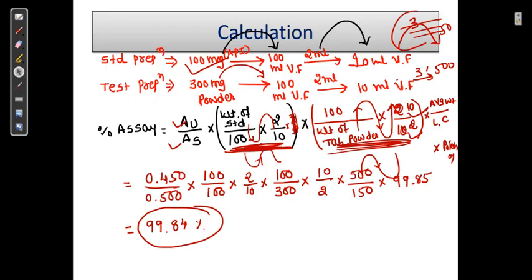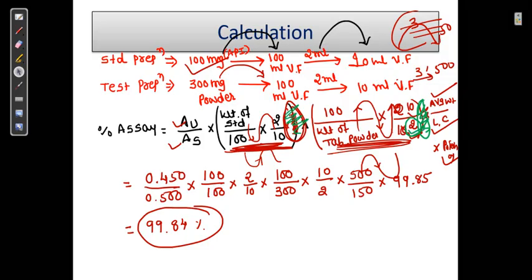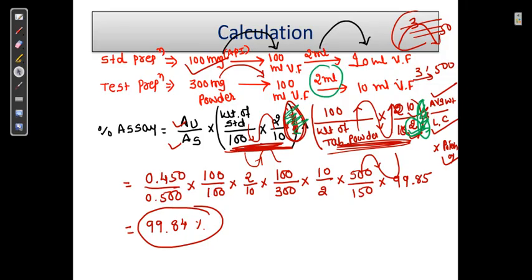What are the possible changes? You will get average weight, label claim, and potency. You will get changes here also or here also. If we have a change in the standard, we have to move numerator divided by denominator. If we have a change in the test, then we follow denominator divided by numerator. Whatever amount we are taking, we have to keep in denominator. If we have taken 2 ml in the standard, that is present in the numerator. This way you can do the calculation.